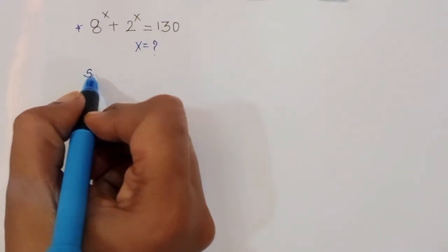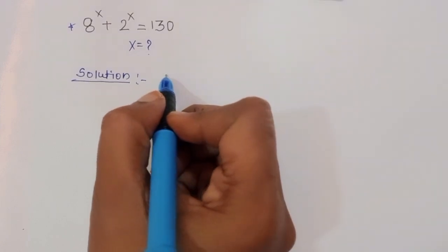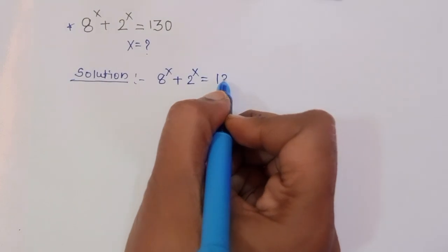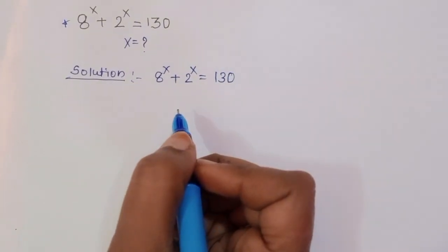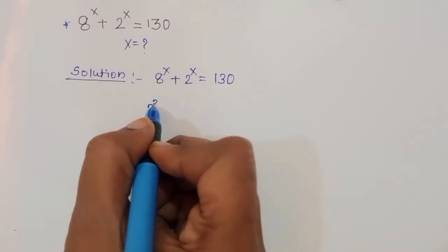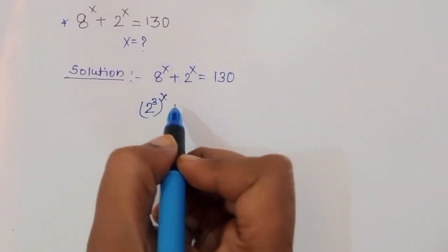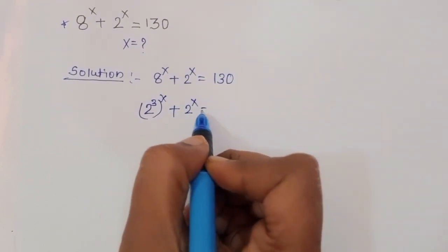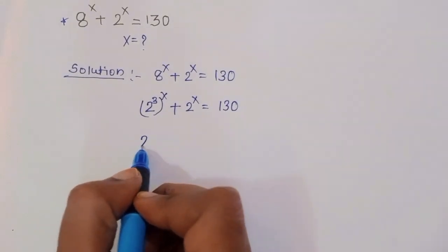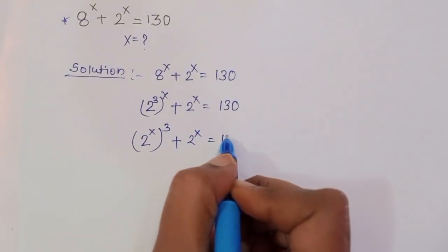Now let's see the solution. What is given? 8 power x plus 2 power x is equal to 130. We can write 8 as 2 power 3, so this becomes 2 power 3 power x plus 2 power x is equal to 130.